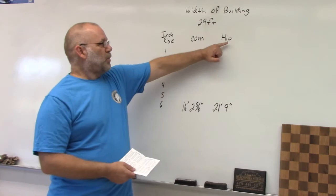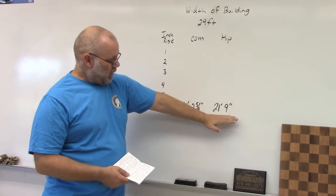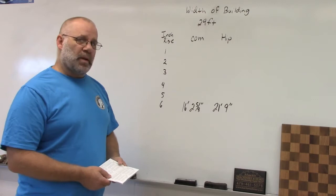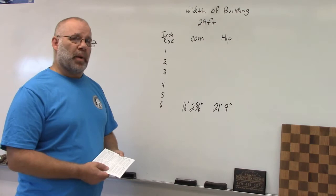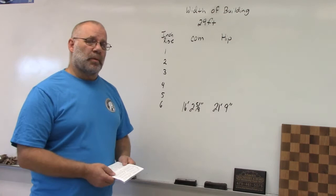Then I go down the hip column where it intersects with 6, and I get 21 feet 9 inches for the length of the hip rafter. So those are the two lengths I would use for the common and hip rafter when constructing a hip roof.